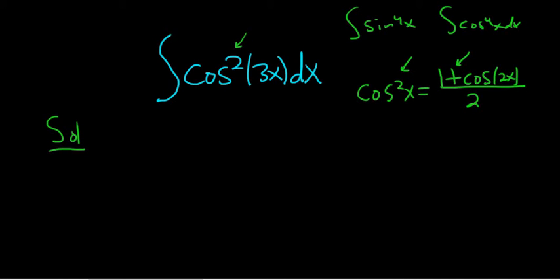So in this case, all we have to do is replace our x with 3x. So it'll be 2 times 3x. So this will be 1 plus cosine of, and this is 6x over 2 dx.